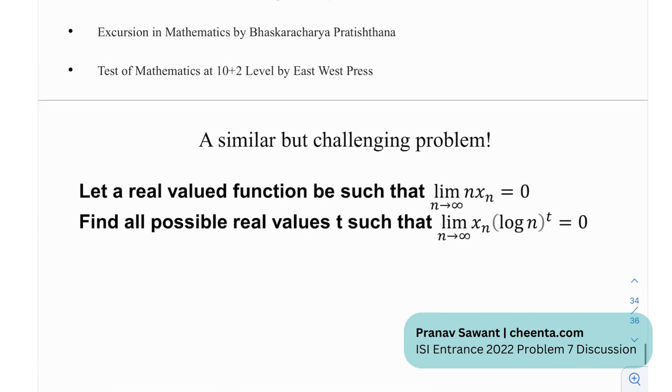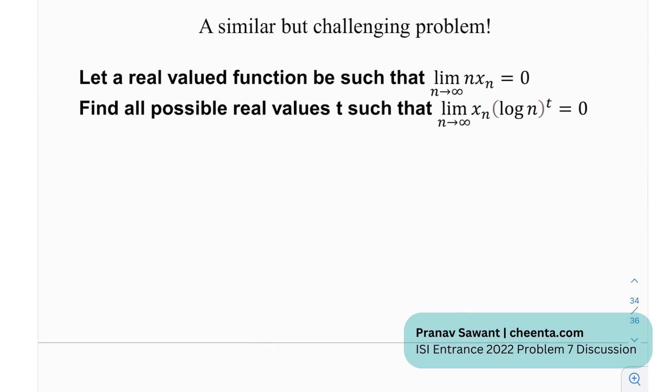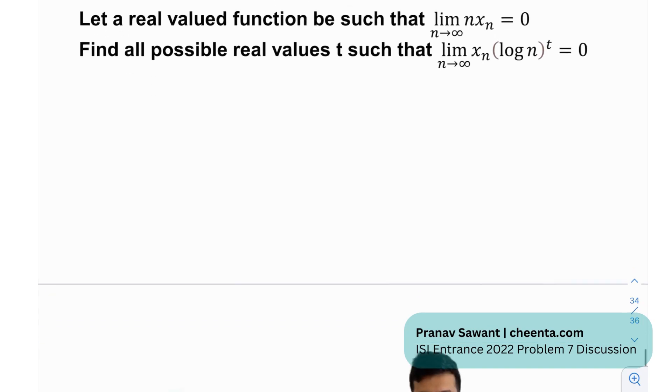And at the end, we have a similar but challenging problem. It's basically asking us to find all possible real values of t such that this given limit holds, and it's given that a is a real valued function such that this limit actually holds true. So, as usual, just try this problem, and let me know if you made any progress on it, or if you were able to solve it, and I'll respond to you. Until then, I'll see you in the next video.